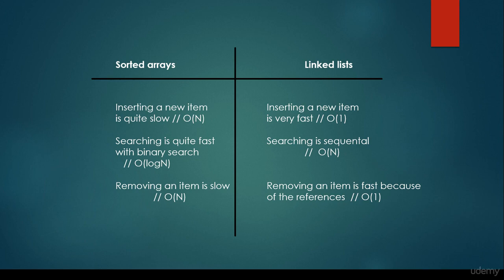We have been considering arrays and linked lists, and we came to the conclusion that whenever we would like to insert a new item into an array, it is quite slow because we have to rearrange the whole array, so it's going to have O(n) linear time complexity. If we would like to insert a new item into a linked list, on the other hand, we are going to end up with a quite fast algorithm — you just have to update the references and it can be done in O(1), constant time complexity.